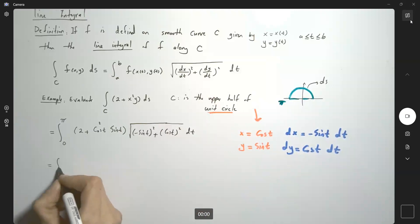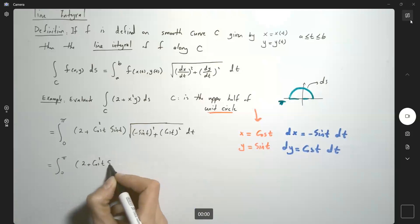This equals the integral from zero to π of (2 plus cosine² t sine t) times 1 dt.